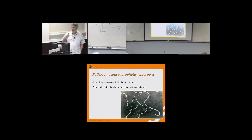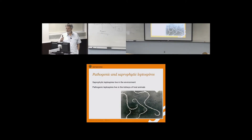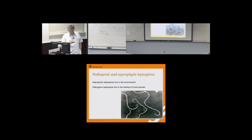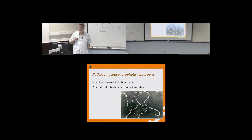So you have pathogenic and saprophytic leptospires. The saprophytic leptospires live in the environment and do not cause disease. Pathogenic leptospires require a host, and they live usually in the kidneys, but also in the genital tract. For example, cattle might have more leptospires in the genital tract than in the kidney. We talked about sexual transmission, and that certainly is an issue.